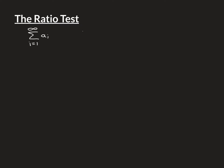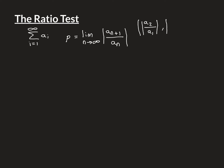The ratio test says that if you're able to find this limit — the limit as n approaches infinity of the modulus of a_{n+1} over a_n — we often call that rho. So it's the limit of the sequence of the ratios between the terms, where you're just interested in how big the terms are rather than whether they're positive or negative. Writing out the sequence: the first term is |a_2/a_1|, the next is |a_3/a_2|, and so on. It's this sequence of the ratios of the terms of our series.